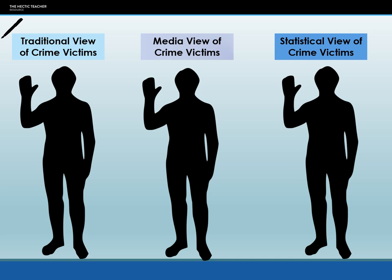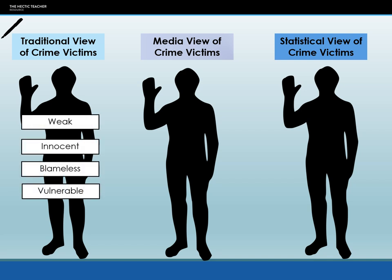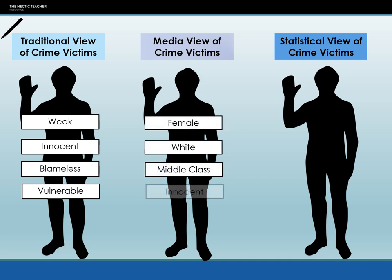The traditional view of a victim of crime is somebody who is weak, innocent, blameless and vulnerable — the hard done by, beyond reproach innocent party. But the media takes a slightly different view. They tend to portray victims as being female, white, middle class and innocent. This is often referred to as 'missing white woman syndrome,' which we'll look at more when we cover media and crime. The press uses victims who are female, white, middle class and innocent because they put across a certain message that the mainstream media is trying to convey.